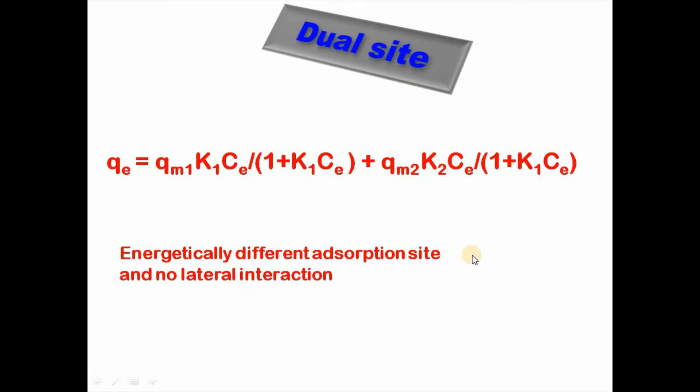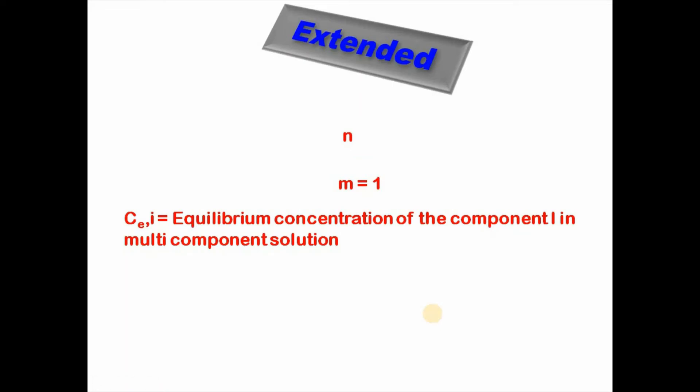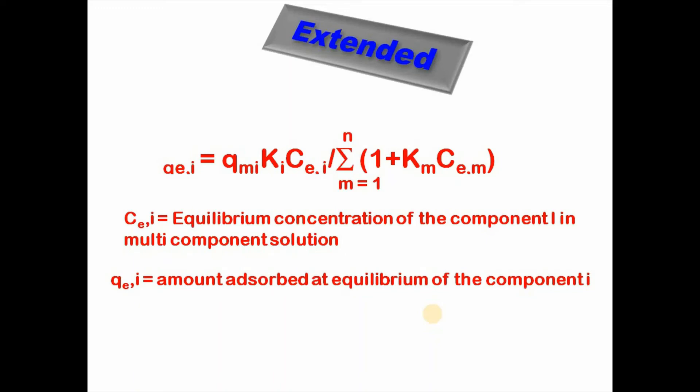Then comes extended Langmuir isotherm model. Scientists have written extended Langmuir isotherm model in various forms. For example, here is a typical form for competitive adsorption study where qe,i equals qmi Ki Ce,i divided by summation n m equals 1 into 1 plus Km Ce,m, where Ce,i equals equilibrium concentration of the component i in multi-component solution, and qe,i equals amount adsorbed at equilibrium, and qmi and Ki are single component Langmuir parameters.